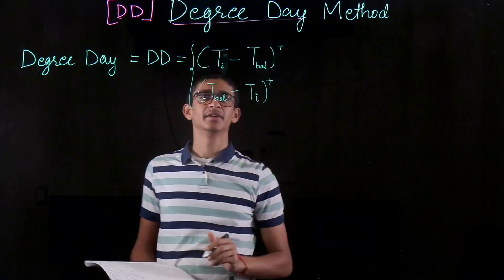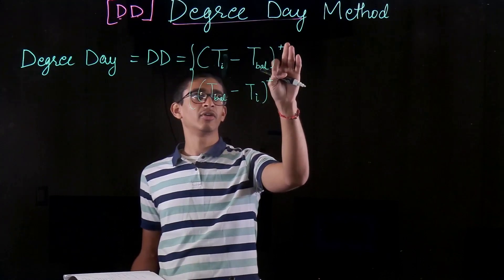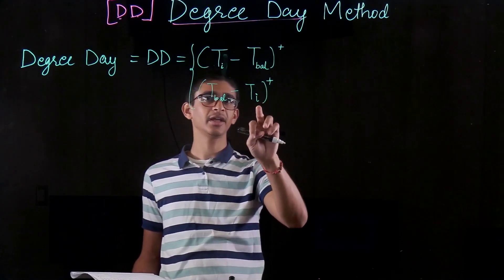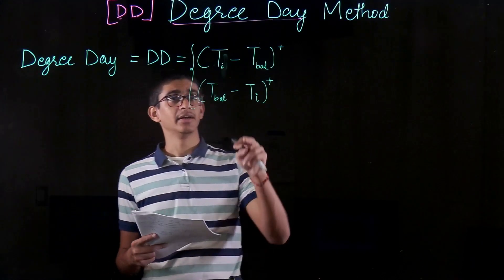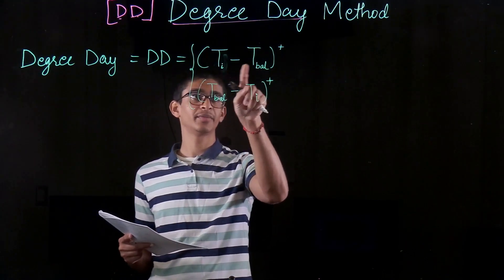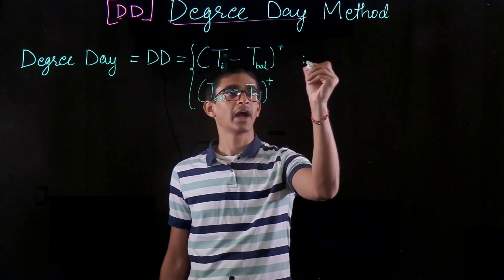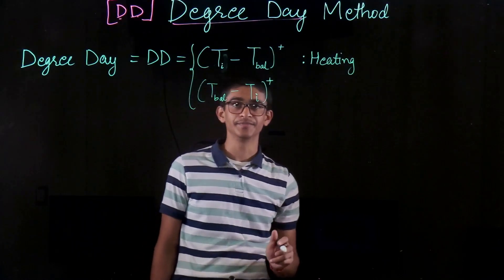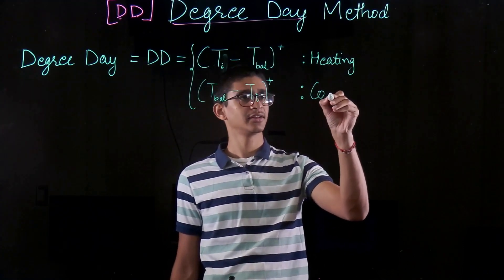The positive sign notation means we take only positive values — if the expression turns out to be negative, we assign it a value of zero. So for the first term, if T_balance is greater than T_i, the value becomes zero. If T_indoor is greater than T_balance, that means my indoor temperature needs to be higher than the balance temperature, which means I need heating.